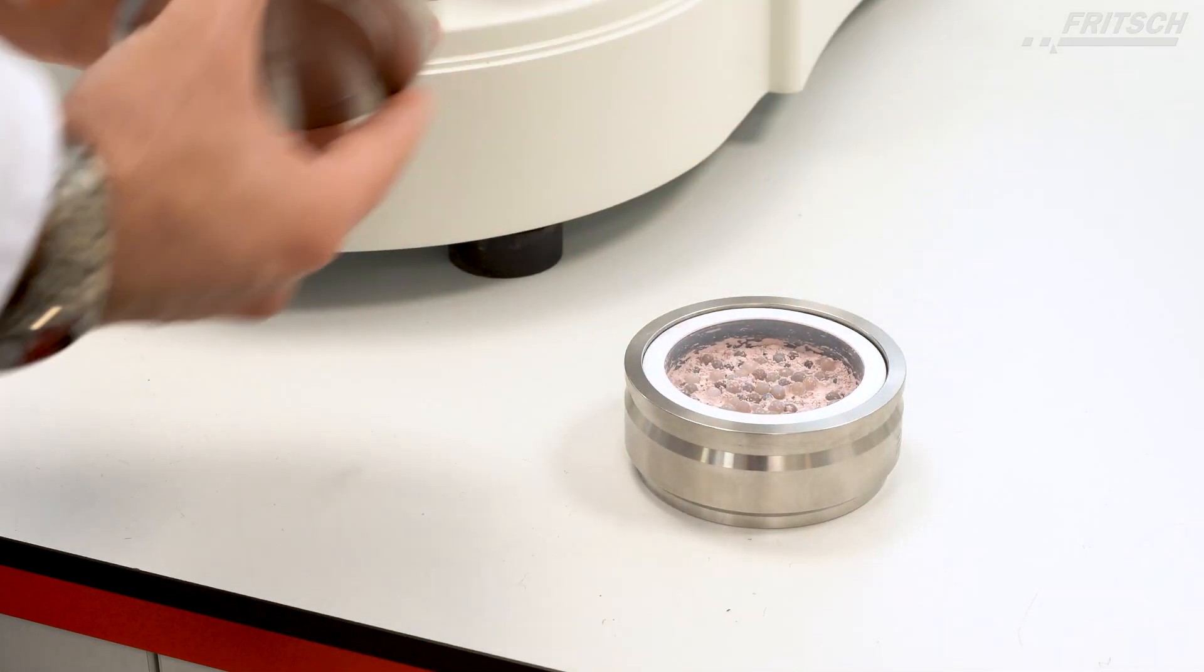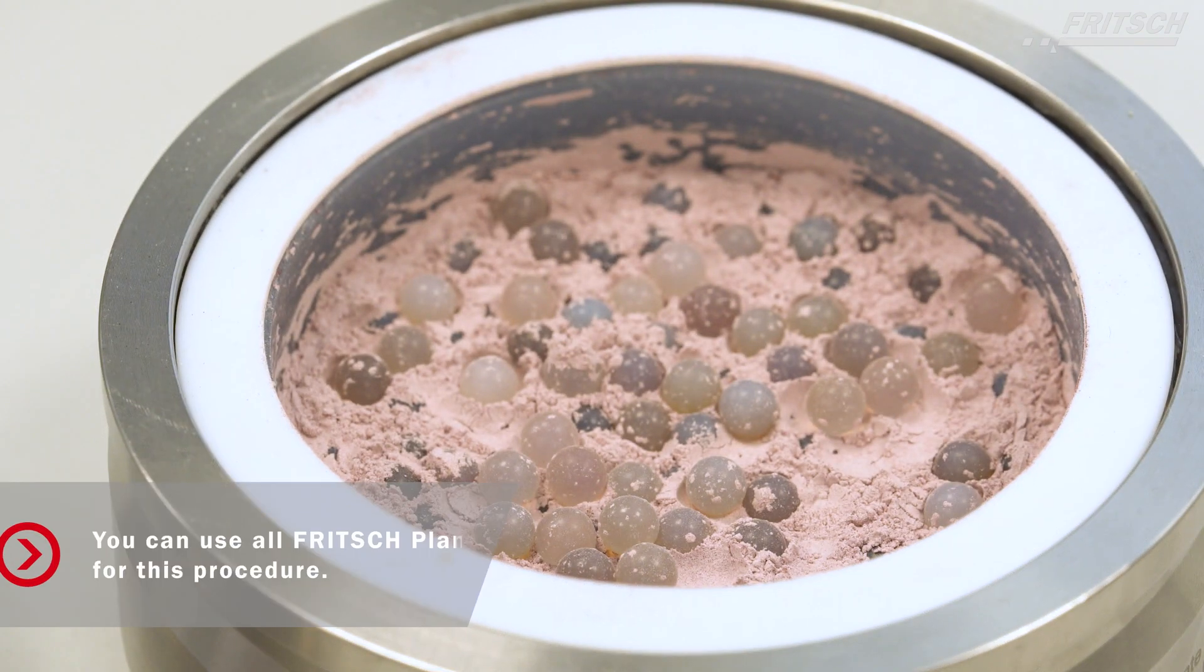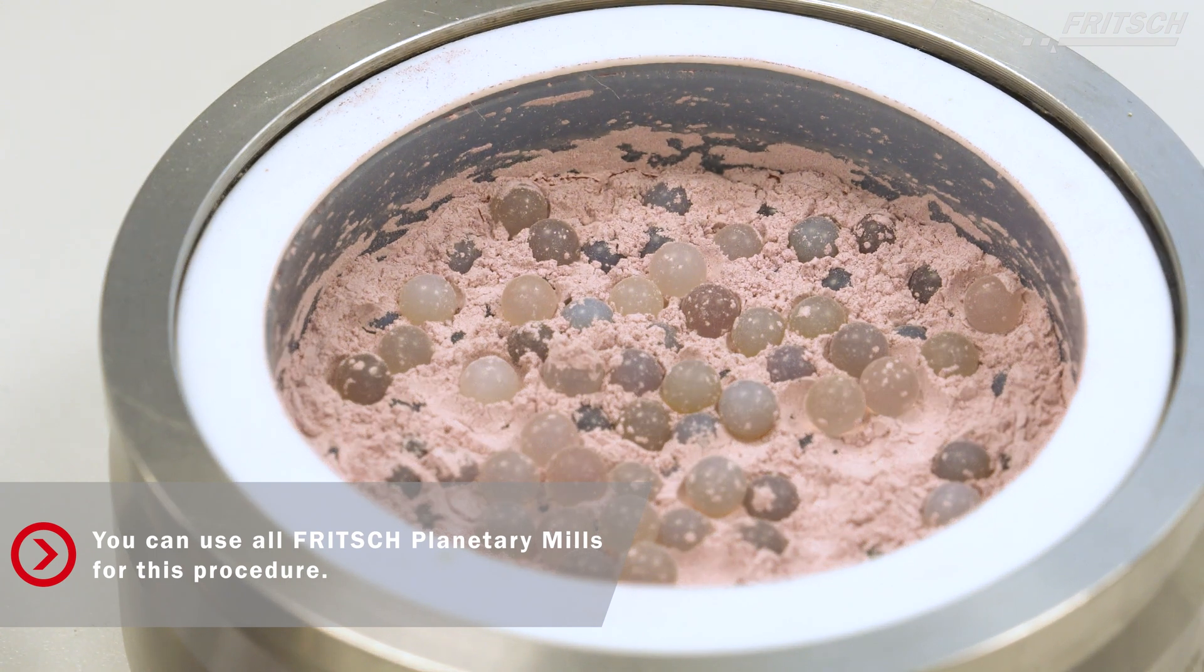Now you have a perfectly homogenous mixture of two samples using a Fritsch Planetary Mill. You can use all Fritsch Planetary Mills for this procedure.